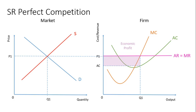That means the rectangle with width from zero to Q1 — the number of products we're selling — and a height of P1 minus AC — the difference between our price and our average cost — that is our economic profit. That is abnormal profit. It is profit above and beyond our opportunity cost. In economics, whenever we draw these graphs, profit means it's above and beyond the opportunity cost — we're talking about economic profit rather than accounting profit.